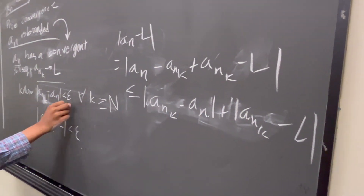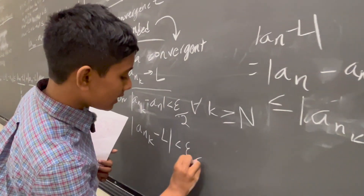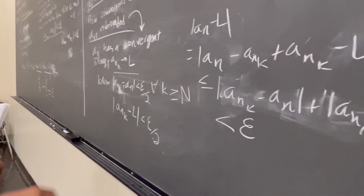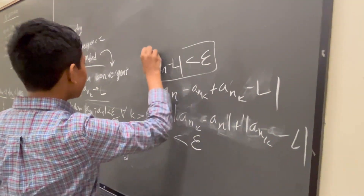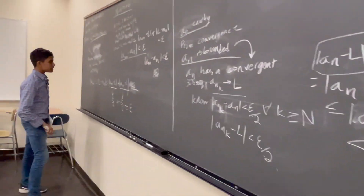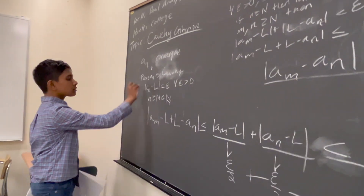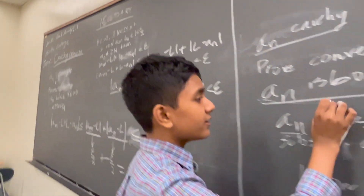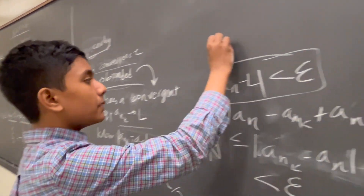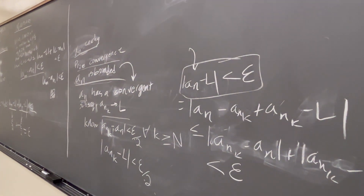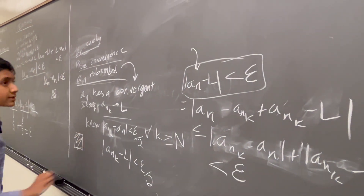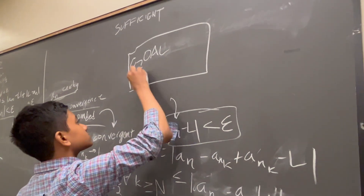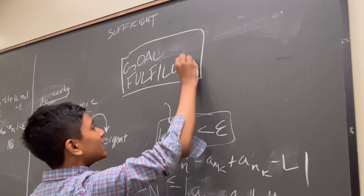We've already made |a_n − a_{n_k}| < epsilon/2 and |a_{n_k} − L| < epsilon/2. So in total |a_n − L| < epsilon, which is our definition of convergence — proved. So essentially what did we do today? We used the triangle inequality very cleverly to show that a_n is Cauchy if convergent, and a_n is convergent if Cauchy, by proving that |a_n − L| < epsilon. We proved both necessary and sufficient, meaning our goal has been fulfilled. Thank you everybody for watching and we'll see you in the next one.